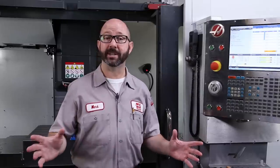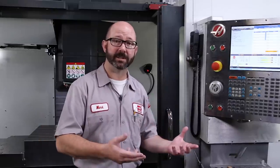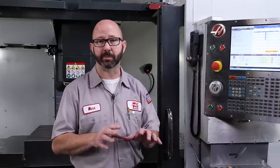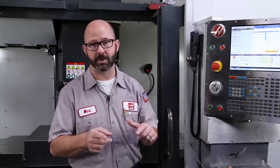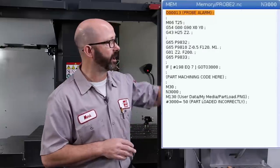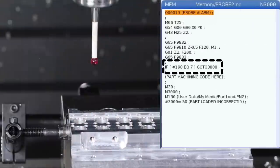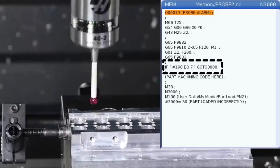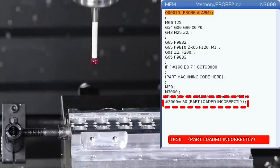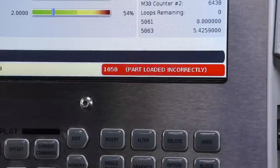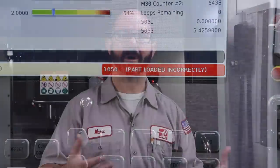We now have all of the information we need to create our own pound 3000 user generated alarm. We can alarm when we want and we can display the alarm message that we create. We can have this happen if the probe is triggered or if the probe isn't triggered. That's a 198 equals seven or 198 equals zero. So here's our if statement. If pound 198 does equal seven, if that's true, then we're going to go to line number N3000. And then we can run our alarm code where we've got a user generated alarm waiting for our operator to tell them that they've loaded the part incorrectly. That's it. That's the entire program in those few lines.